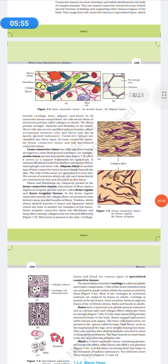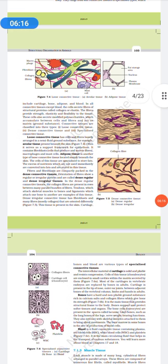Loose connective tissue is what? Loose connective tissues are cells and fibers, which are loosely arranged inside a semi-fluid ground substance. For example, areolar tissue, present beneath the skin. Often, it contains fibroblast. Then we have adipose tissue, which is a type of loose connective tissue, which is located mainly beneath the skin. They are specialized to store fats. Then we have fibers and fibroblast. They are compactly packed in the dense connective tissue. The orientation of the fibers shows regular and irregular pattern and called dense regular and dense irregular, respectively.